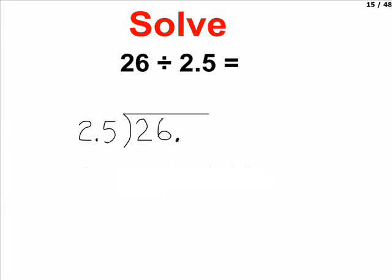To move it all the way to the right, we had to skip over one digit in order to get there. And the rule is, whatever you do to the outside, you do to the inside. So on the inside, we also must move the decimal one space to the right.